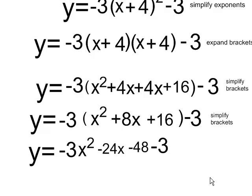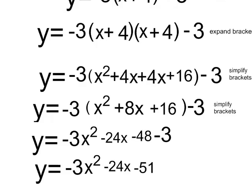So my final step is just to simplify negative 48 minus 3, and there is my final quadratic: y equals negative 3x squared minus 24x minus 51 in standard form.